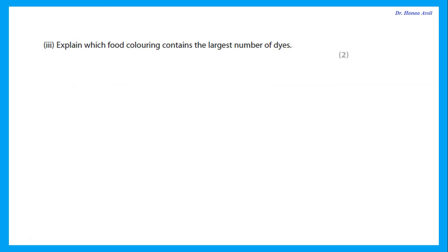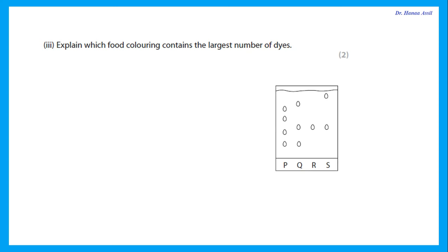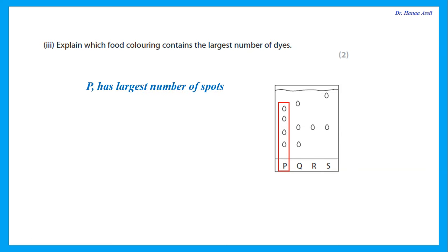Explain which food coloring contains the largest number of dyes. It is the one that goes up to give the largest number of spots — that is P. Please remember it says 'explain and which,' so you have to say which food coloring contains the largest number of dyes (that's P) and explain. Many students forget to explain. This is because P is the one that has the largest number of spots.